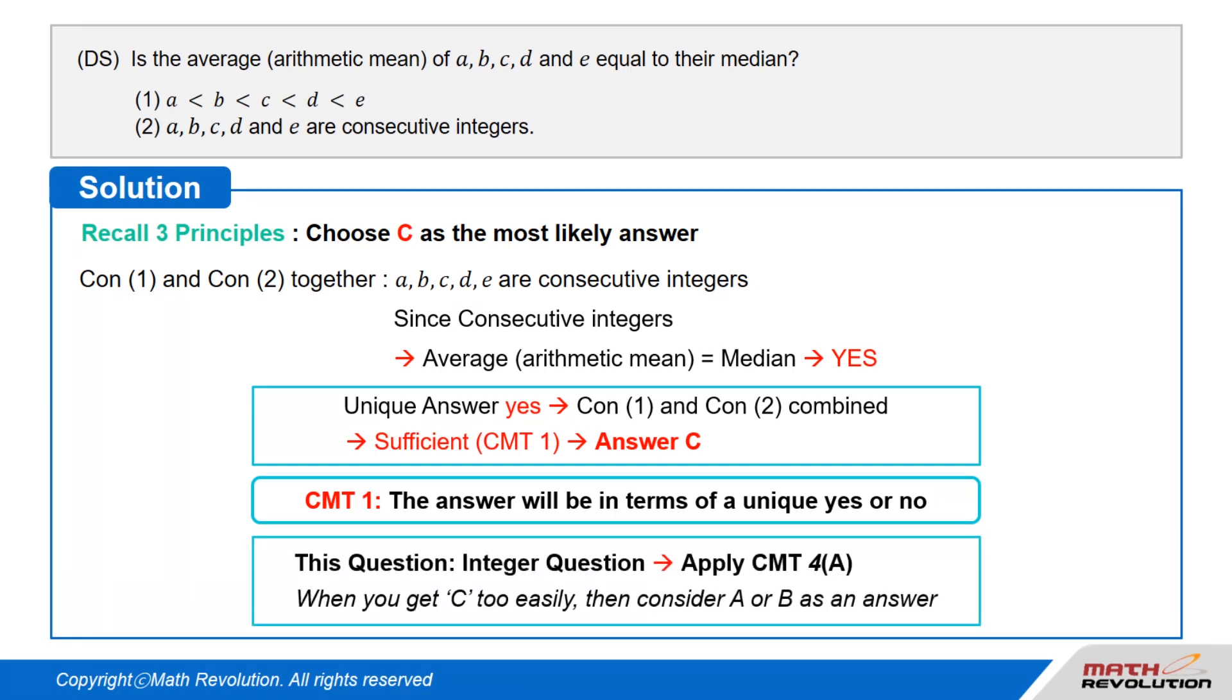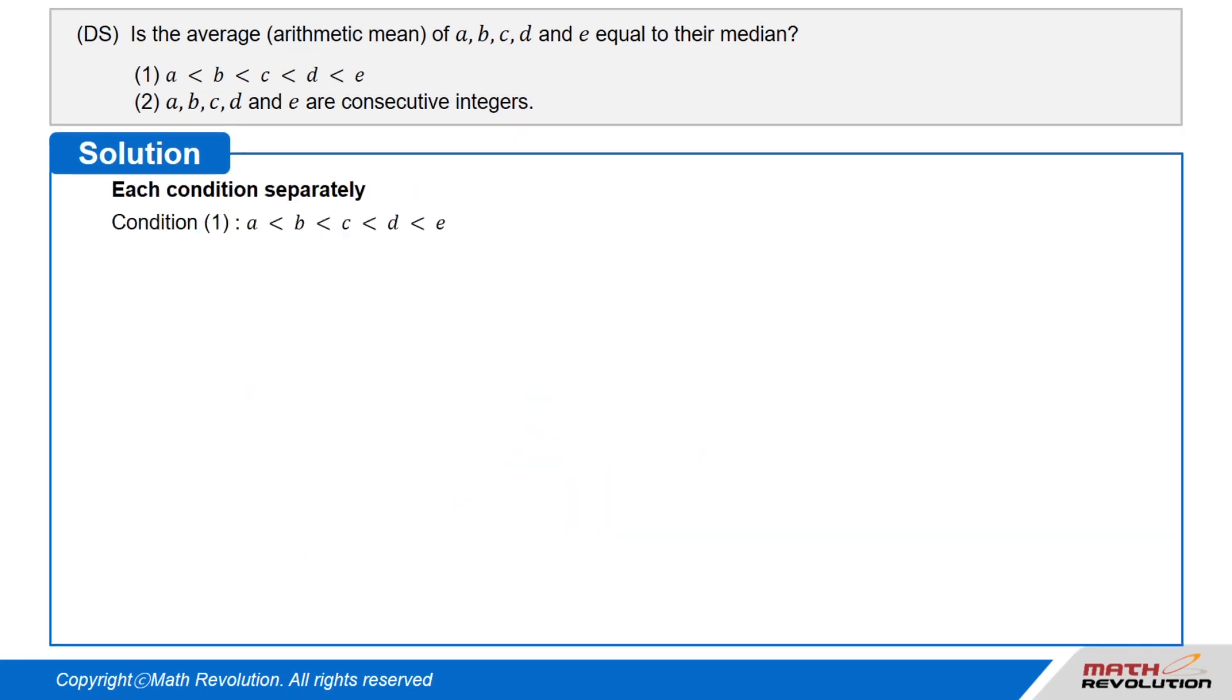However, since this question is an integer question, which is also one of the key questions, we should apply CMT 4A, which means that if you get C as an answer too easily, then consider A or B as an answer. So we have to consider each condition separately. Condition 1 tells us that A is less than B, which is less than C, which is less than D, which is less than E.